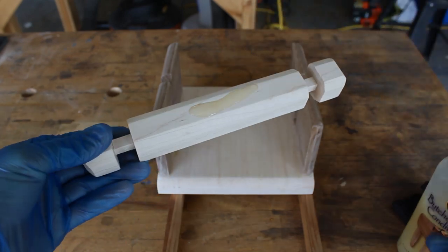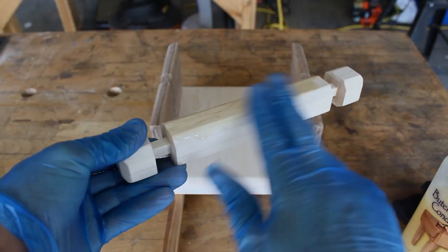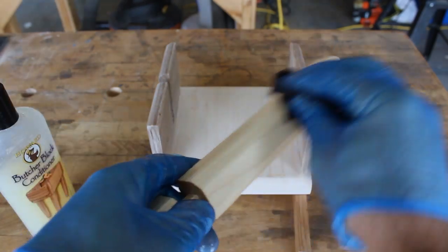Since this will be placed on the dining room table, I went with Howard's butcher block conditioner just because I wanted to use a food safe finish.